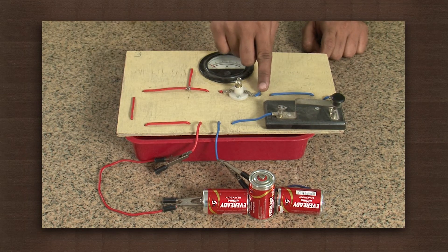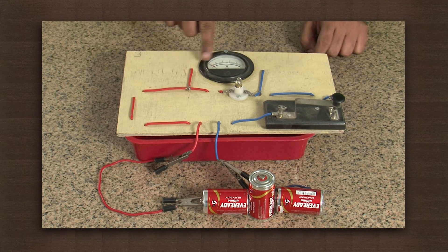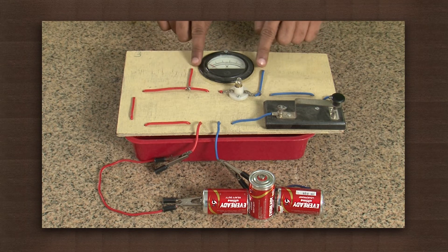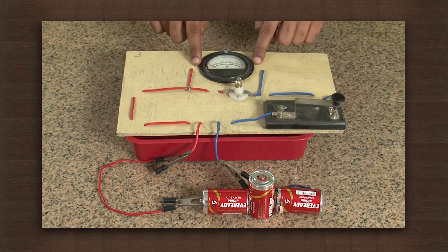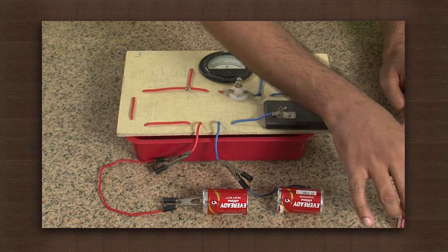Note that the voltmeter is connected in parallel to this bulb here. We will first connect two cells to the circuit and see the potential difference.